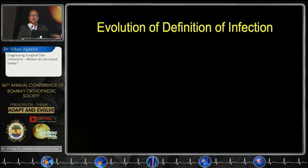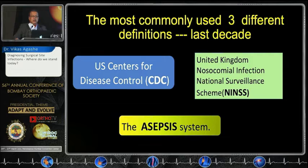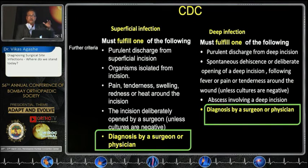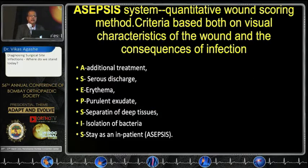Is there any reliable definition, to be honest? The definition has evolved over a period of years. For many years, three definitions were commonly used: the CDC definition (US Centers for Disease Control), then NINSS (UK National Nosocomial Infection Surveillance Scheme), and the ASEPSIS system. These covered various types such as superficial and deep infection. NINSS was almost similar to CDC, while ASEPSIS was a quantitative scoring system where scores indicated the severity of infection.